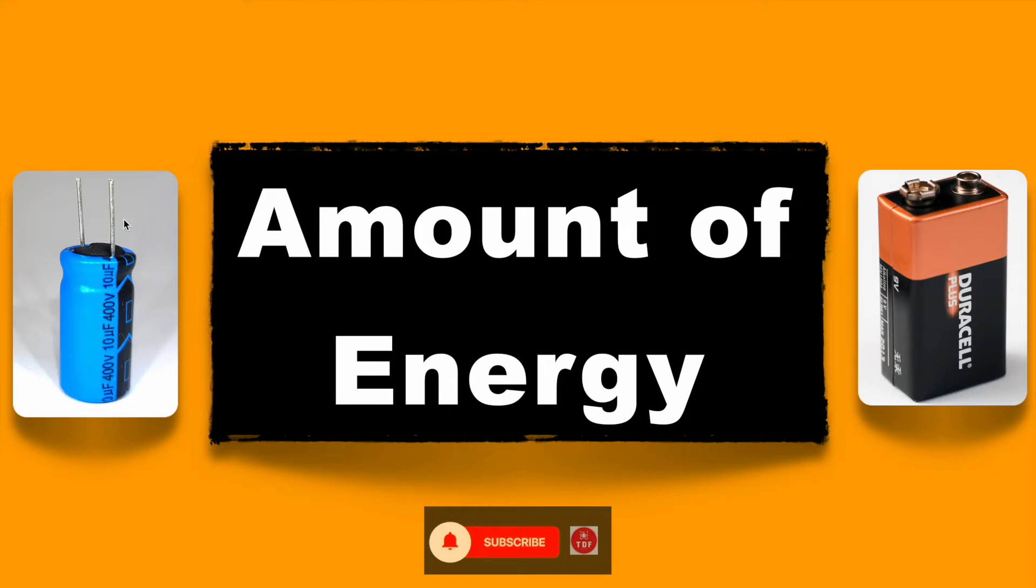This is how battery stores the electrical energy in the form of chemical energy. When this battery is connected to the load, these lithium ions again come back from cathode terminal to anode terminal. So till now we understood that capacitor stores energy in the form of electrical energy, while battery stores the energy in the form of chemical energy.